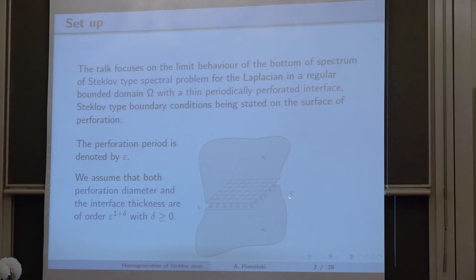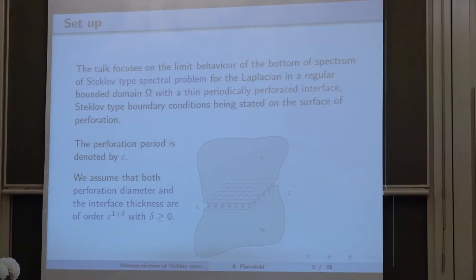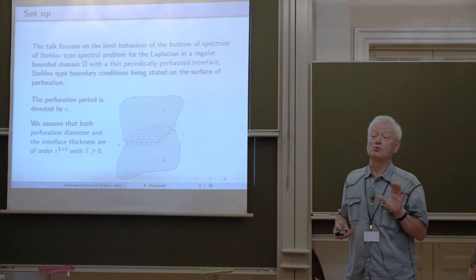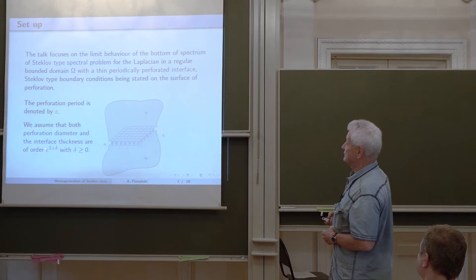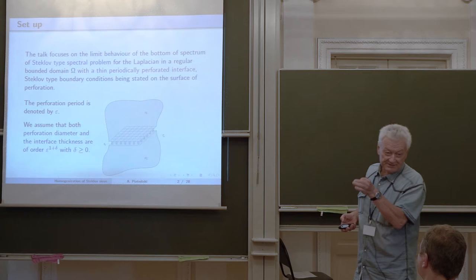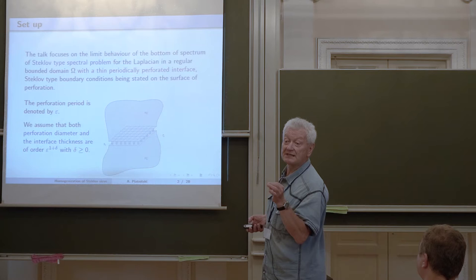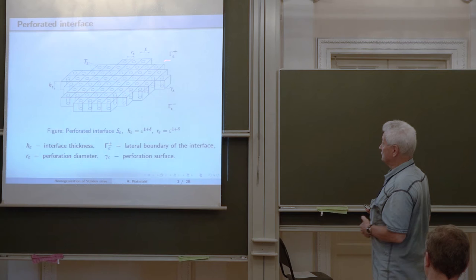In the first part of my talk, I will assume that the perforation is periodic along this surface, and that the thickness of this interface and the diameter of these cylinders are of the same order. Both are of order epsilon to the power one plus delta. The period is epsilon, so they should be of order epsilon or smaller. We consider both the case when delta equals zero, meaning they are of the same order as the period, and delta greater than zero, meaning they are much smaller.